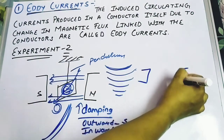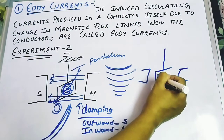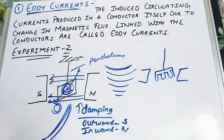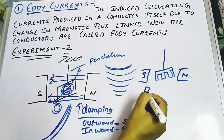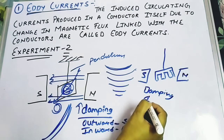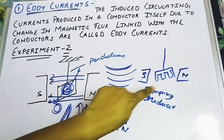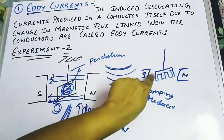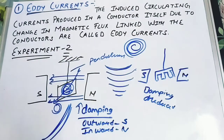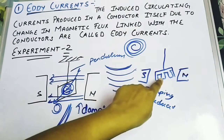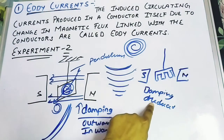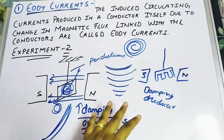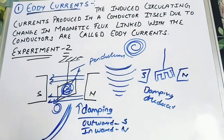In the same experiment, we then used a slotted metallic frame instead of a solid one. We observed that with a slotted frame, the damping is reduced. This is because the slots force the induced current to cover a much larger area before it can change polarity, reducing the overall eddy current effect. So using a slotted ring or slotted metallic plate reduces the damping effect.